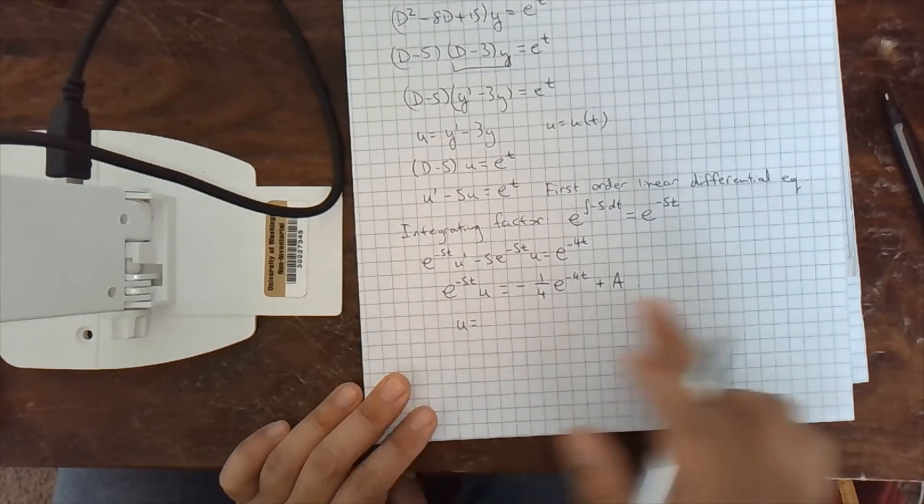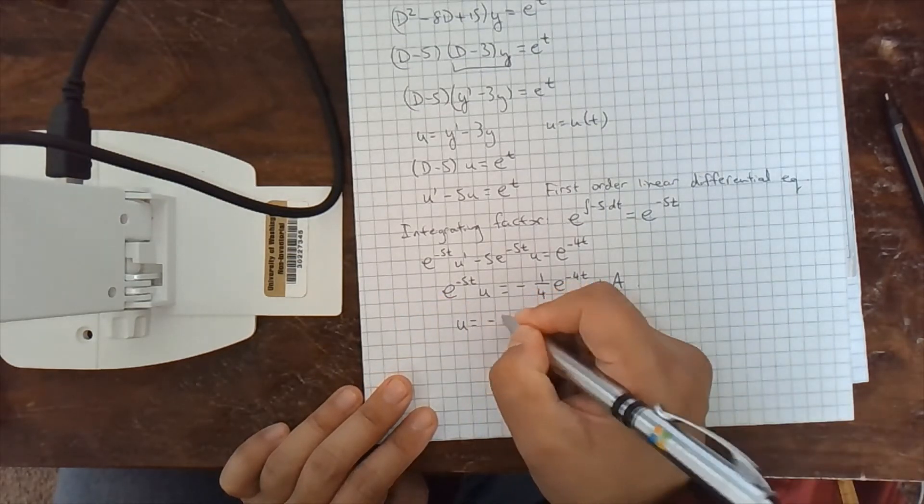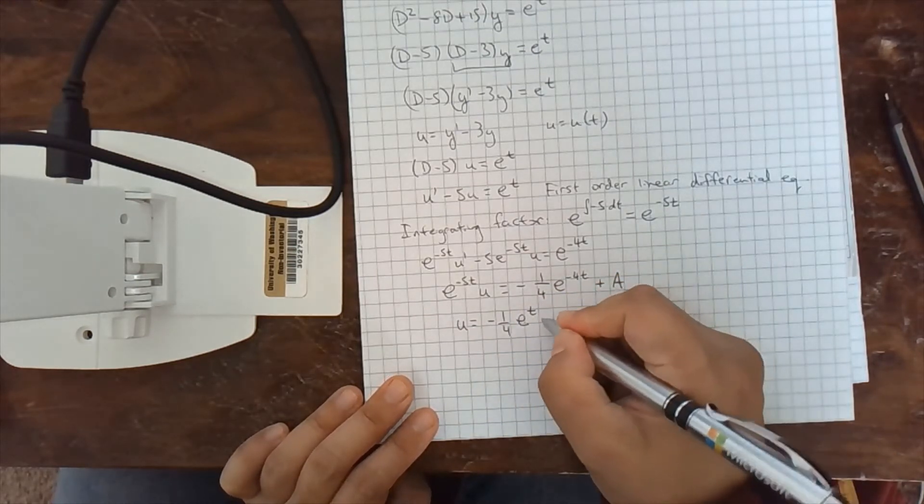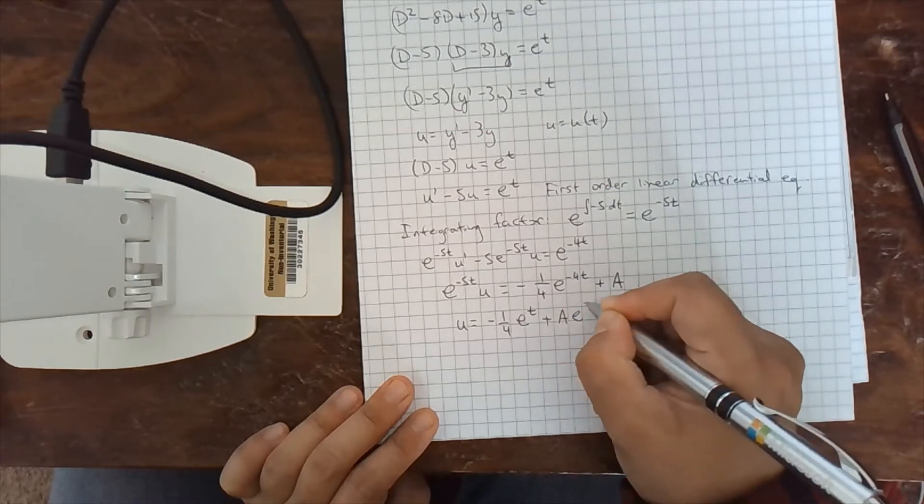Okay, multiply both sides by e to the 5t to get u by itself. We'll get negative 1 fourth. This is going to go back to e to the positive 1t plus a e to the 5t.